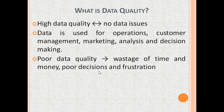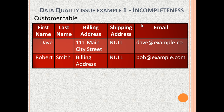Now let us see examples of data issues. The first issue is incompleteness. Here is the customer table with columns: first name, last name, billing address, shipping address and email. For example, Dave has a billing address of 111 Main City Street and the email is Dave at example.co.